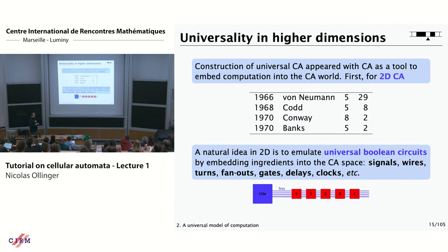With all that, you can implement finite state machines. And with finite state machines, you have enough to make the control of a computational device and to do some kind of memory unit. Taking infinitely many potential copies of the memory, you have infinite memory. Putting all these together, you have a universal computer.